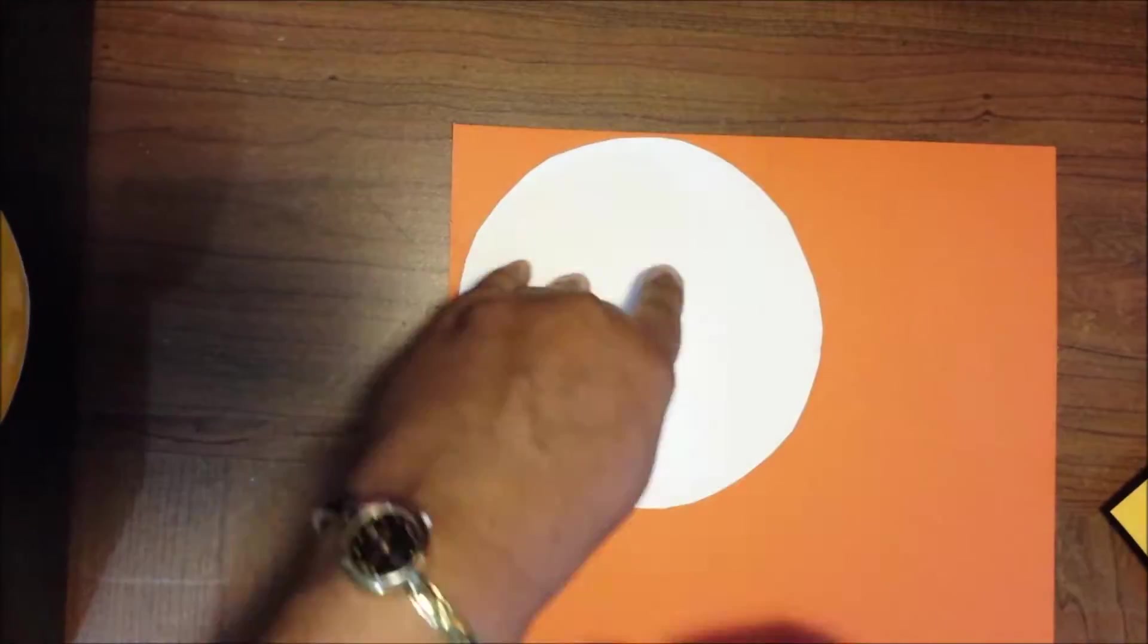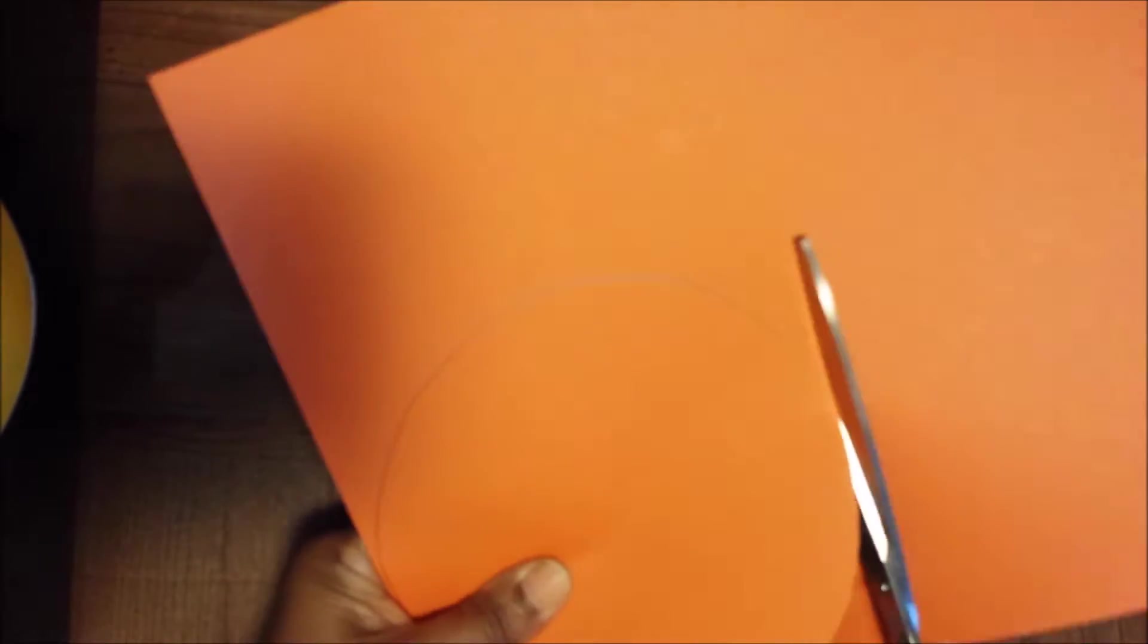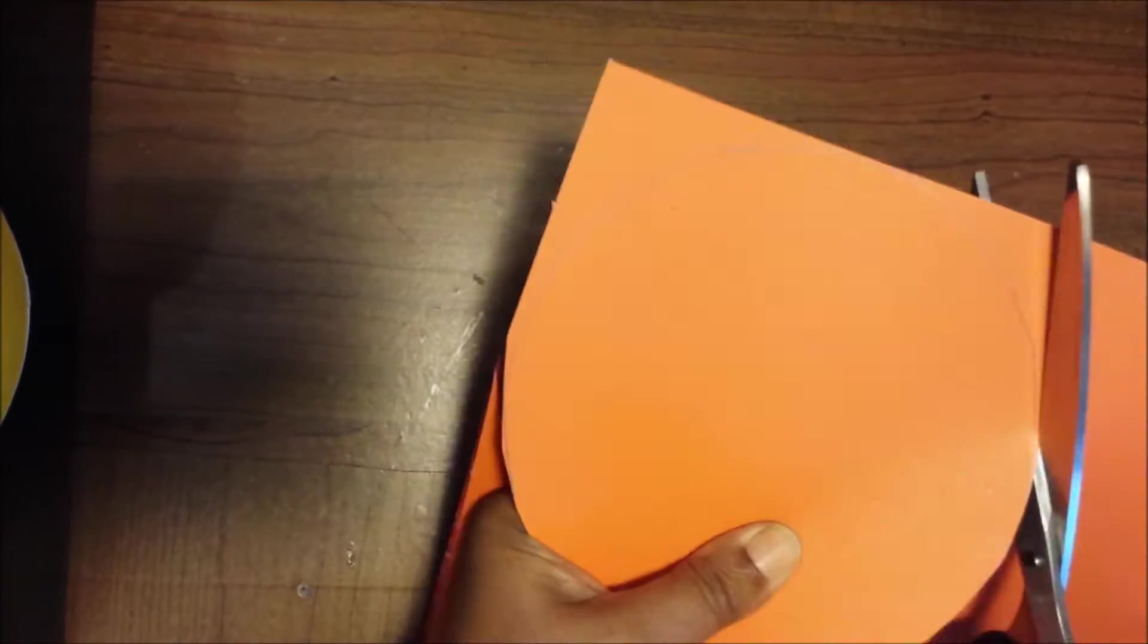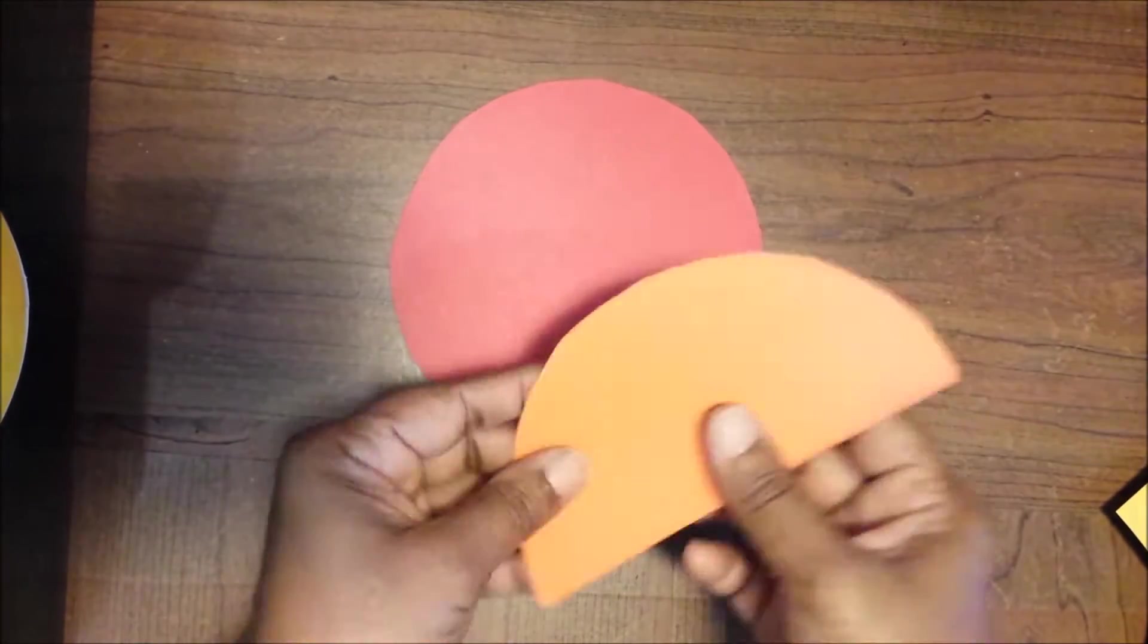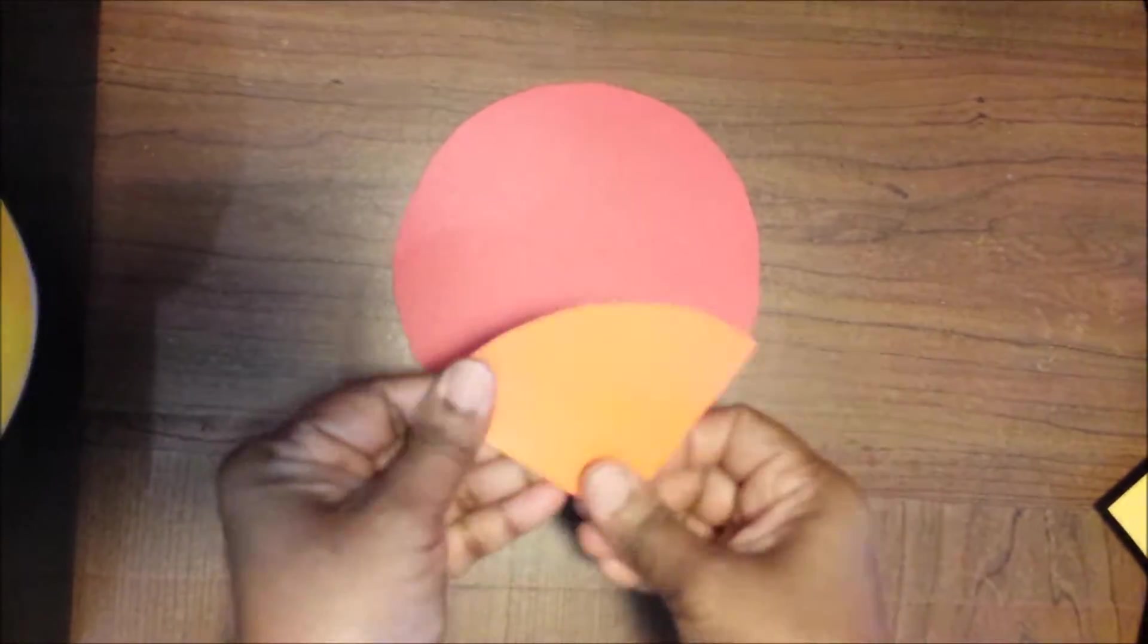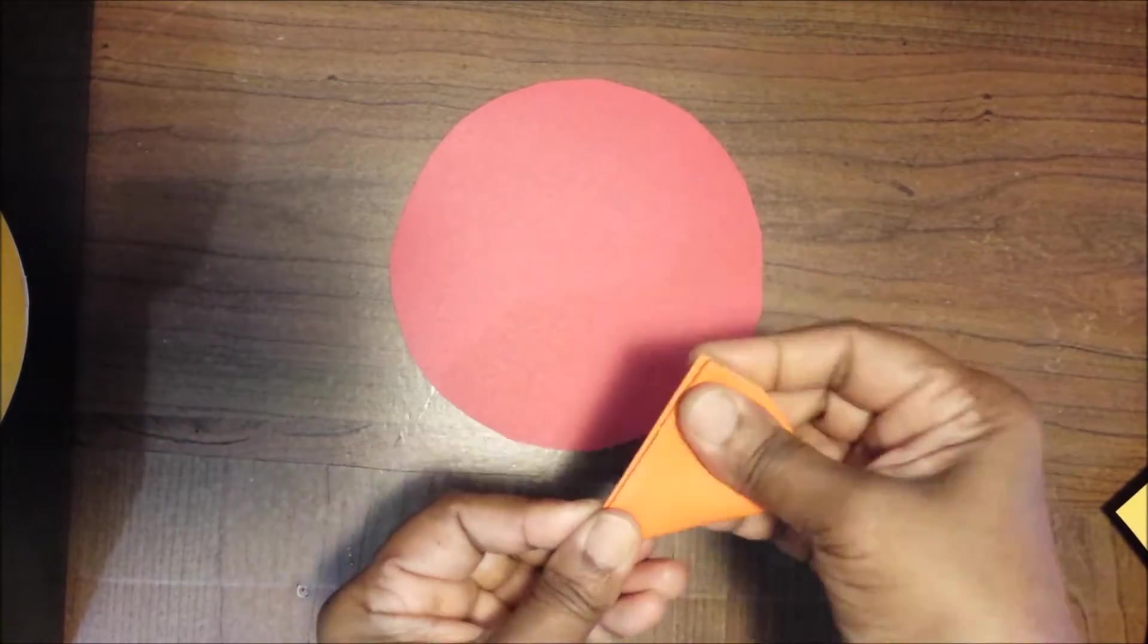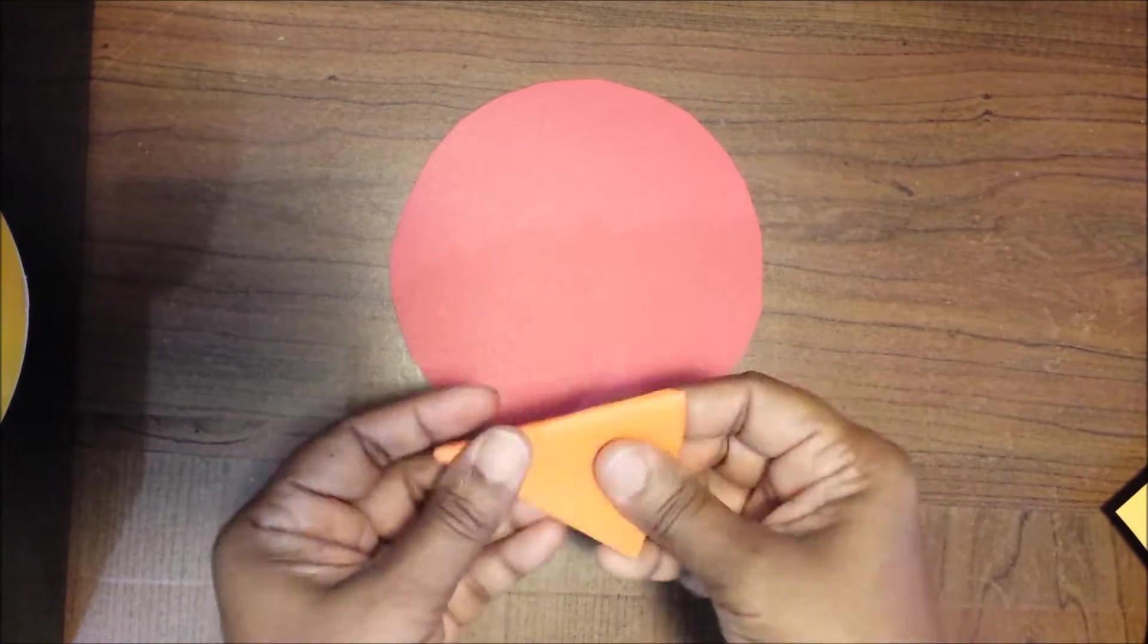Take other construction paper, two colors, totally opposite to the cone. Any measurement you can take, cut it in circle, or otherwise make straight strips and fold it. In that also, you can make petal shapes.